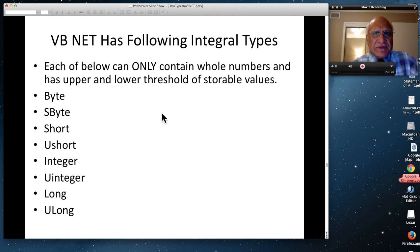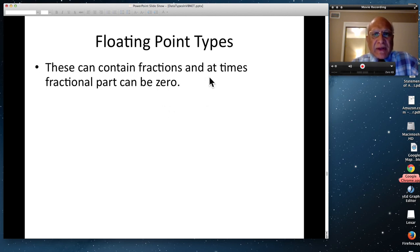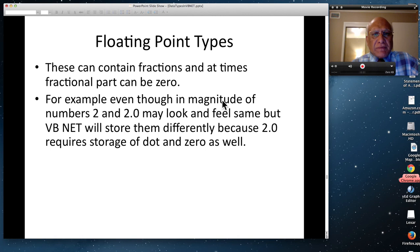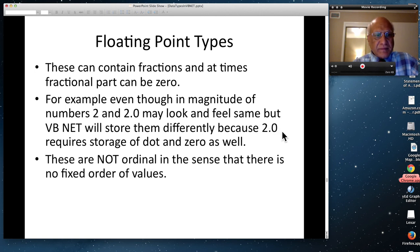I don't think any other website is better than that. So just search for VB.NET or VB2012 and it will have a very good description. If I find a link, I'll post that. So these are the types. Very often we'll use integer type actually for whole numbers. Floating point types can contain fraction, but at times fraction part can be zero. For example, even though in magnitude the number 2 and 2.0 may look and feel the same, but VB.NET will store them differently because 2.0 requires storage of this dot and the zero both. So even if magnitude is same, storage will be in the RAM. These are not ordinal. They do not have fixed order values. And that changes their entire mathematics.